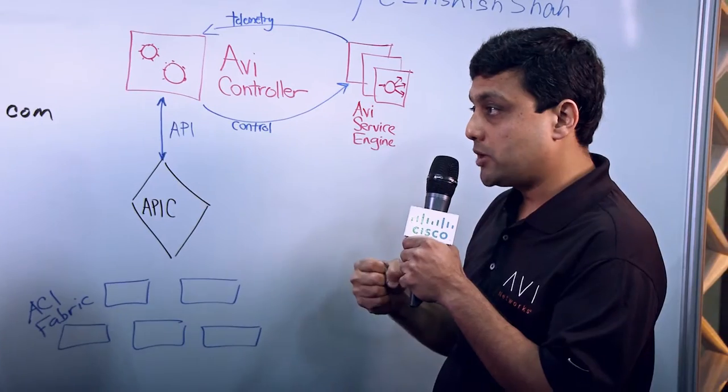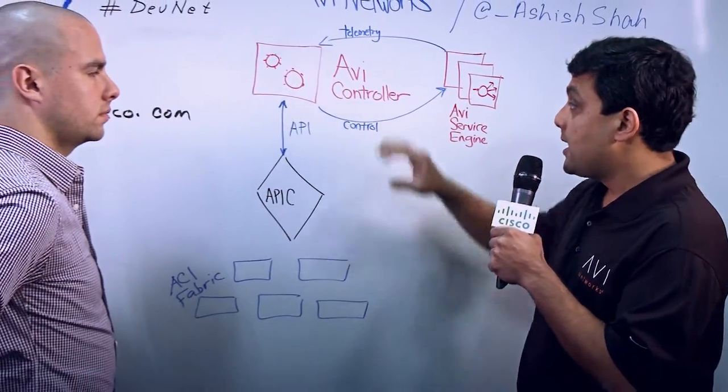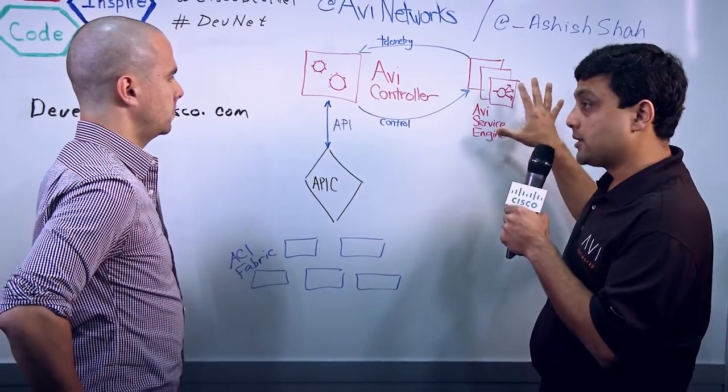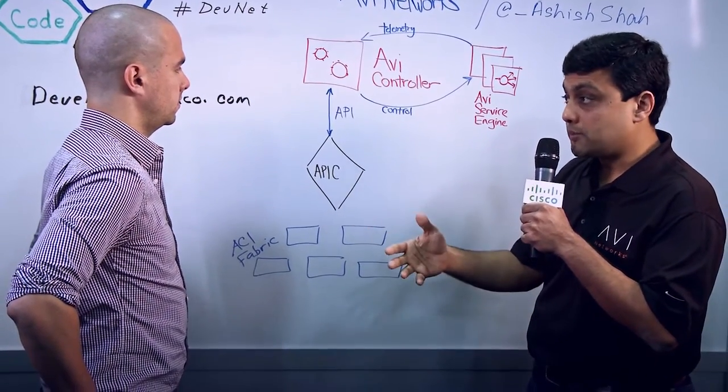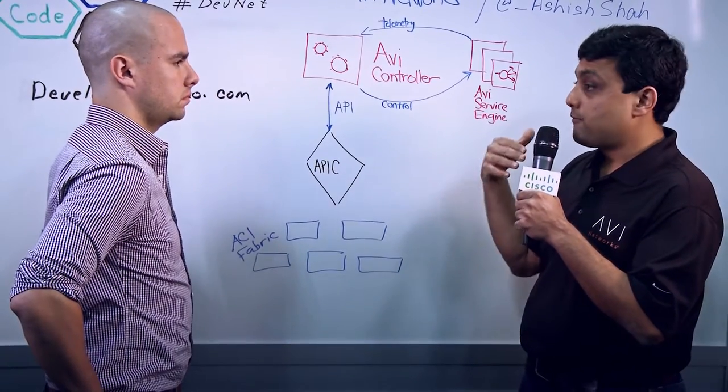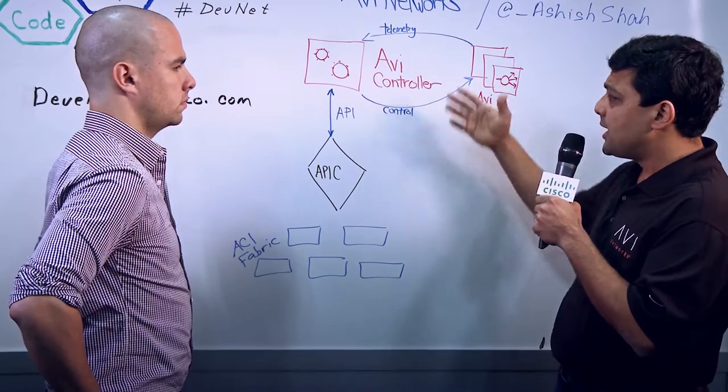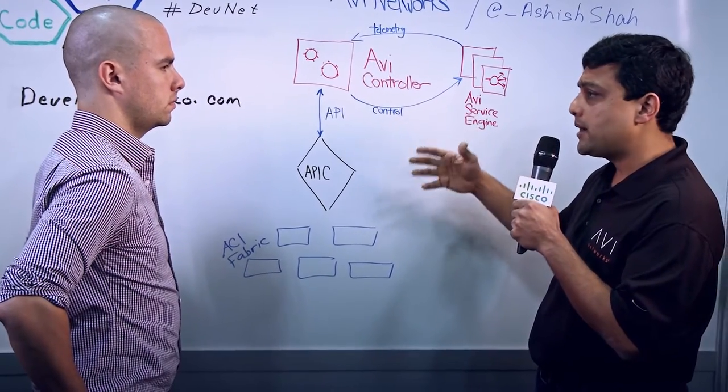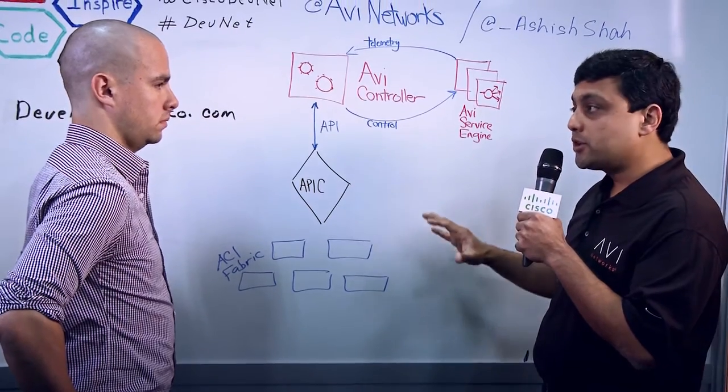AVI controller automatically imports that information, includes endpoint group, the endpoint information automatically, and programs the load balancers. It programs APIC for the LIVSIF mapping, for the device selection policies, talks to vCenter for the port group information, and so on. So what the end users get is, in the form of this API, is fully automated, one-touch deployment of load balancers. But that's just day zero problem.